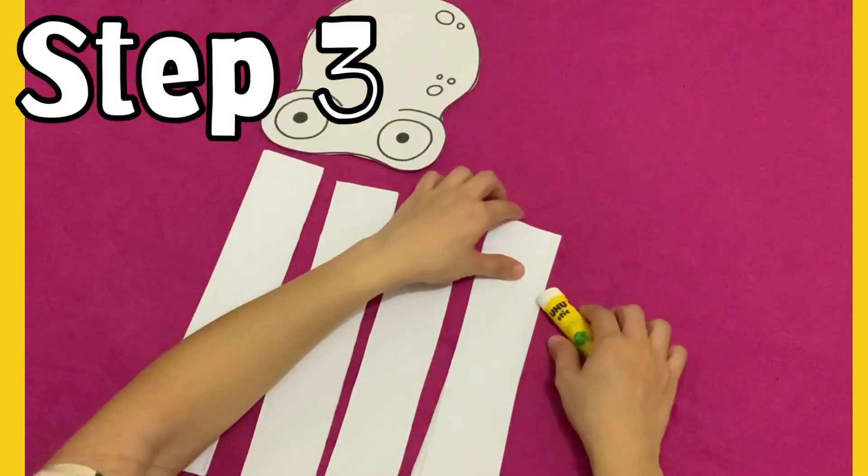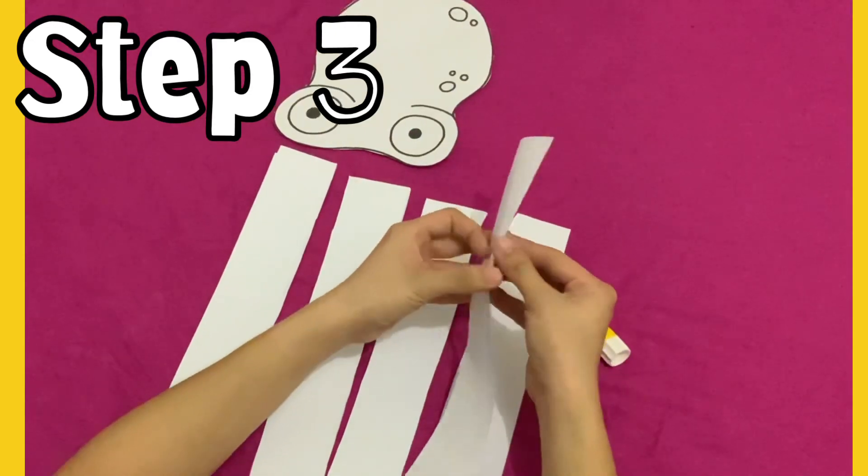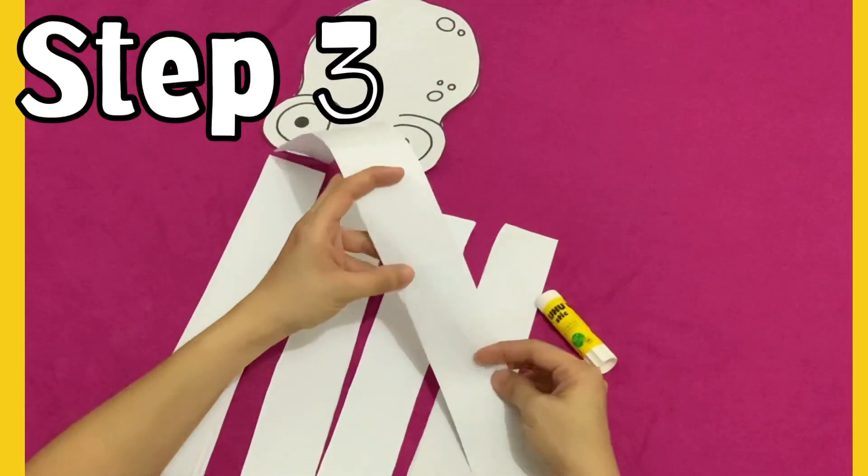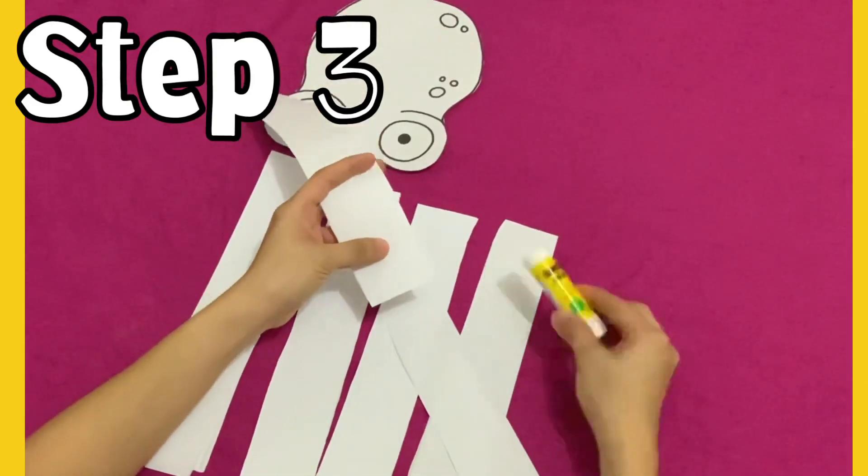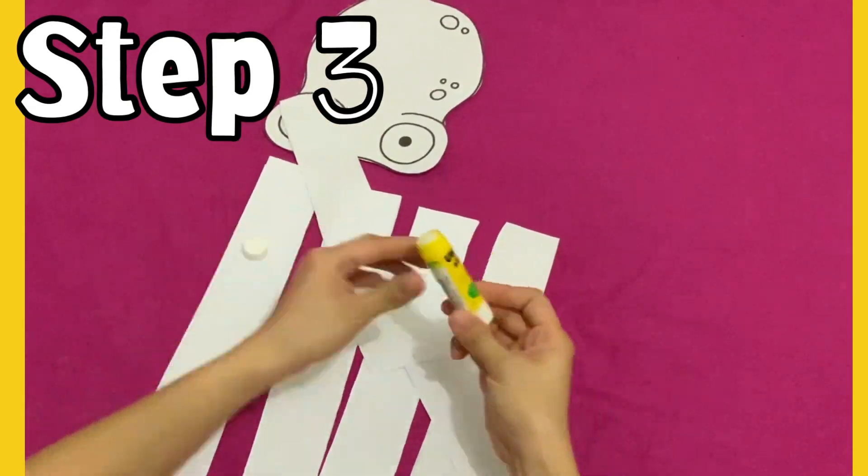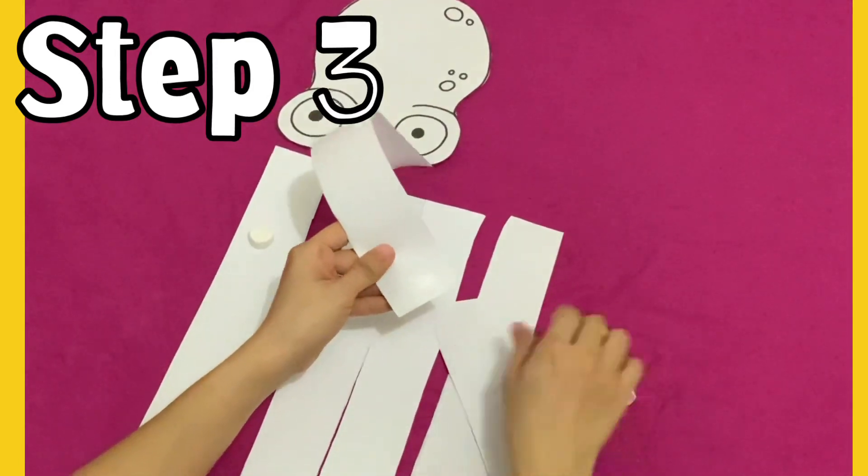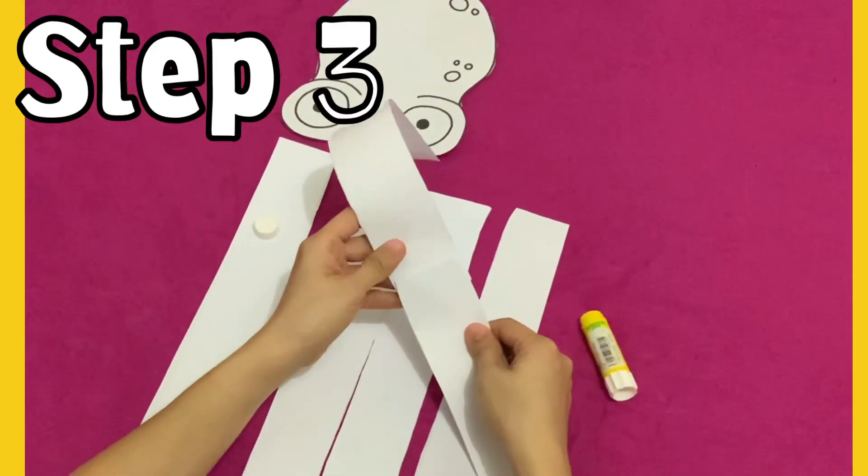For step number three, we are going to make the tentacles of an octopus. So if you are going to put a little bit of glue at the bottom and paste them together, you would make one long tentacle. So let's make four long tentacles.